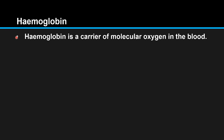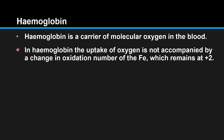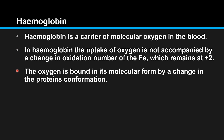Hemoglobin is a carrier of molecular oxygen in the blood. In hemoglobin, the uptake of oxygen is not accompanied by a change in oxidation number of the iron, which remains at plus 2. The oxygen is bound in its molecular form by a change in the protein's conformation.